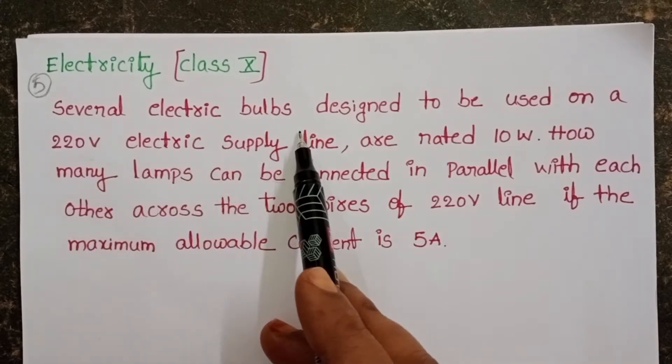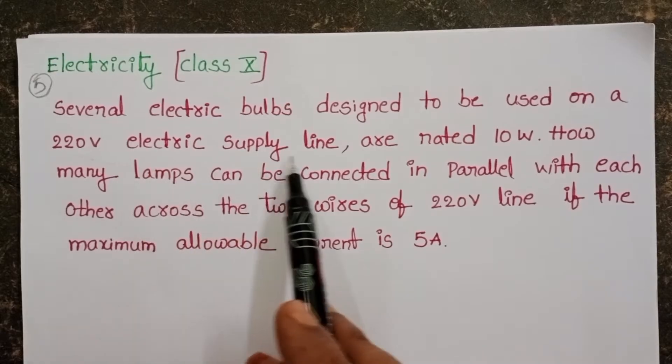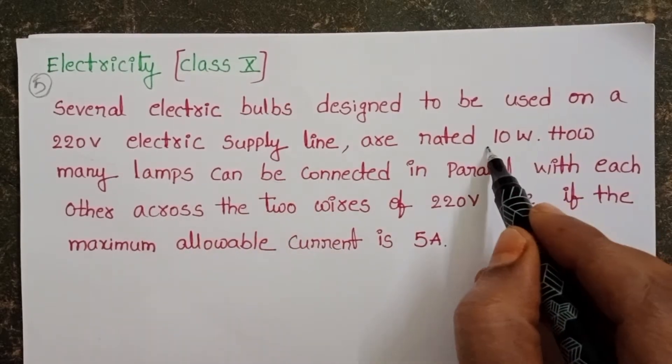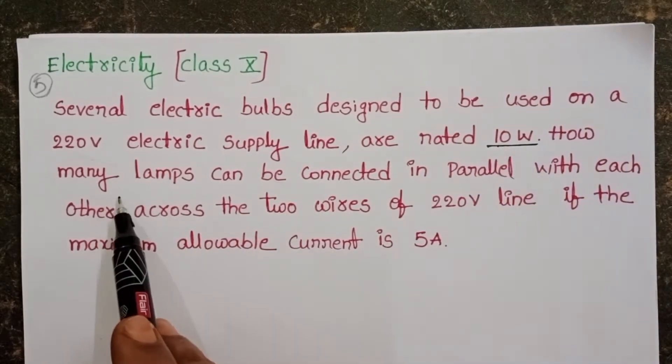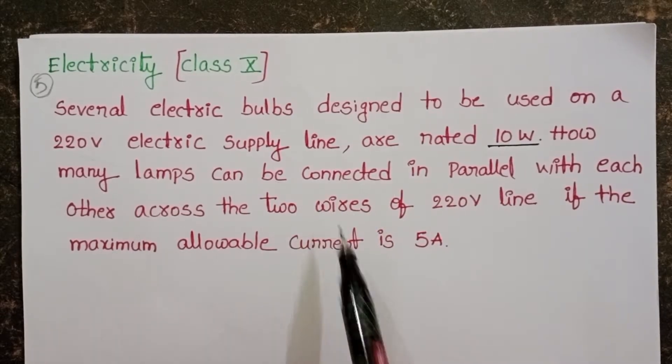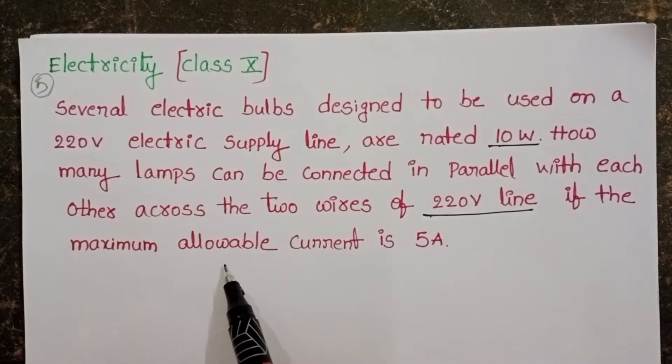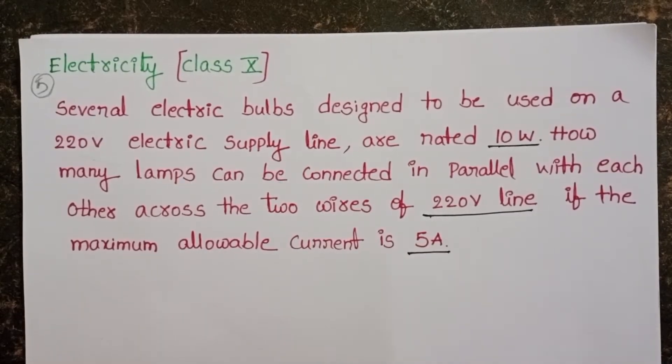Several electric bulbs designed to be used on a 220 volt electric supply line are rated 10 watts. How many lamps can be connected in parallel with each other across the two wires of 220 volt line if the maximum allowable current is 5 amperes?